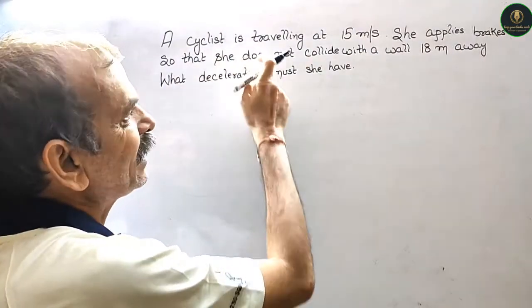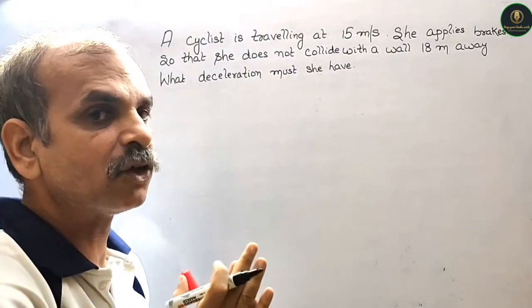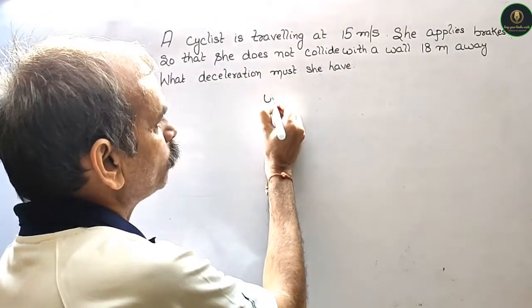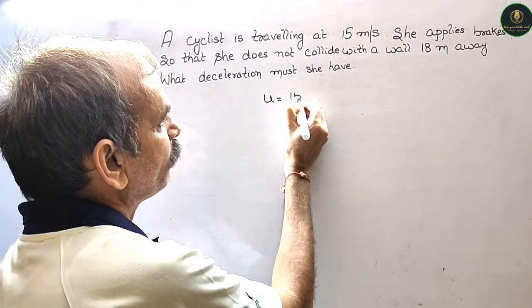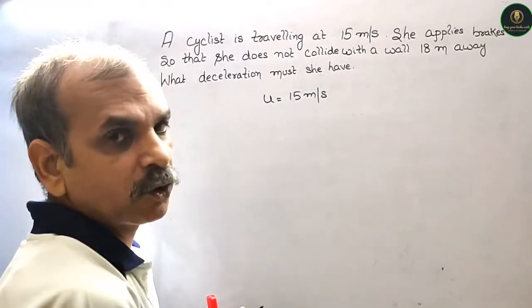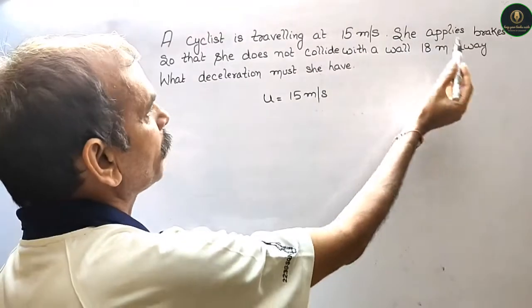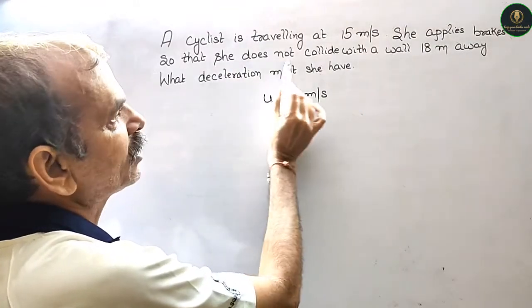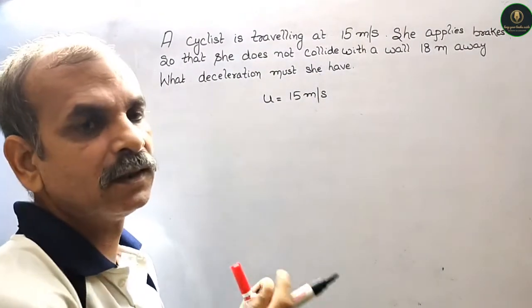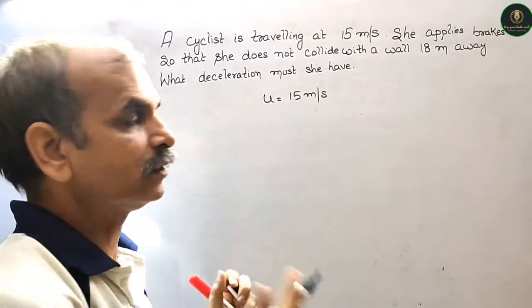A cyclist is traveling, that means initial velocity is 15 meters per second. U is 15 meters per second. She applies brakes so that she does not collide with a wall, that means S is distance is 18 meters.